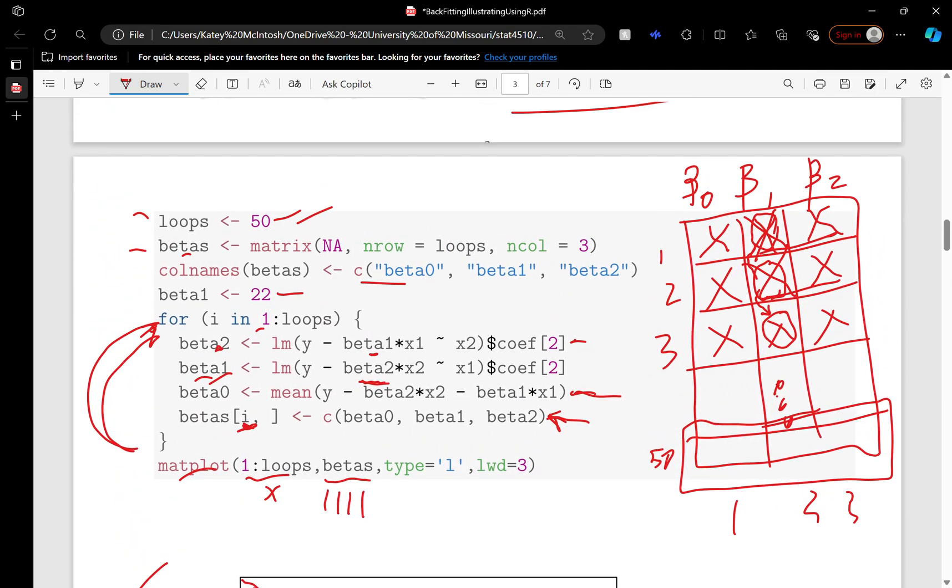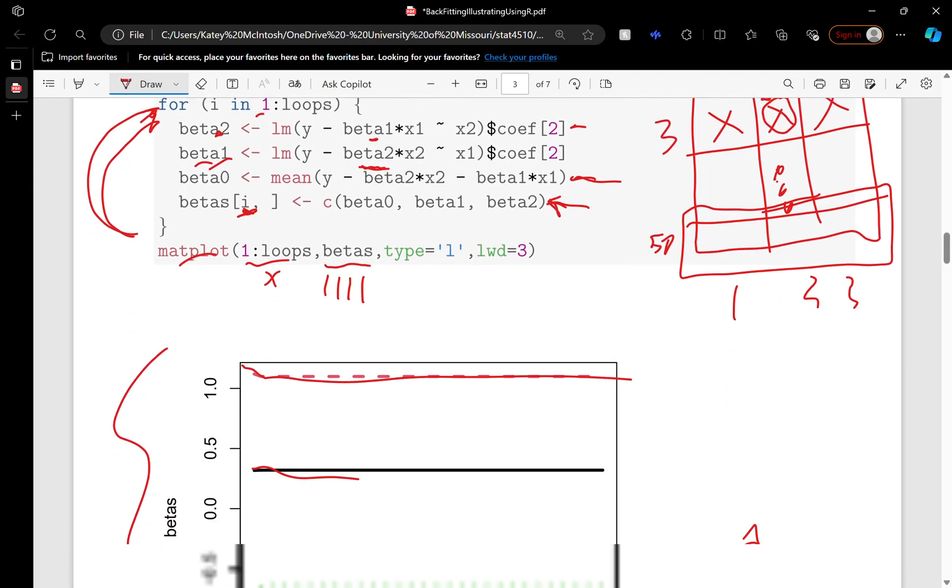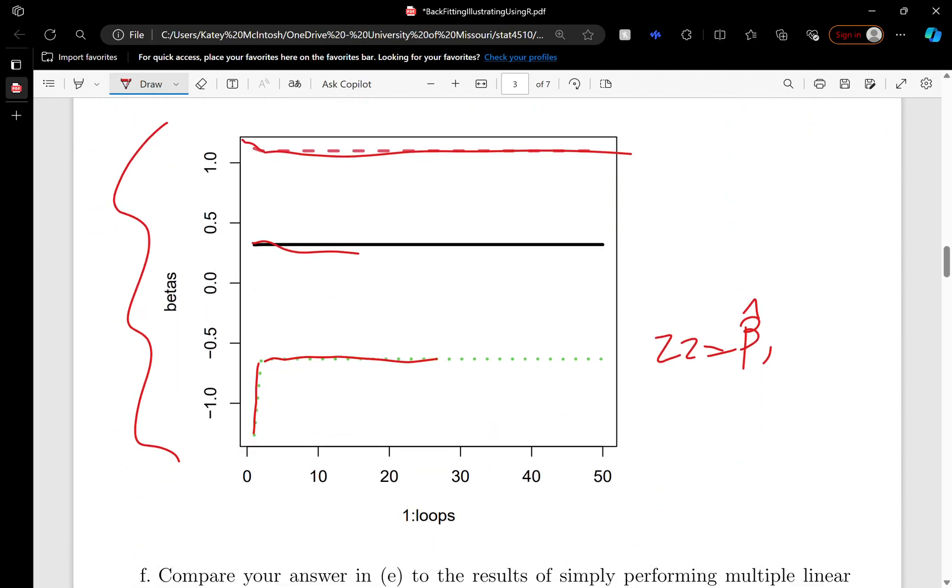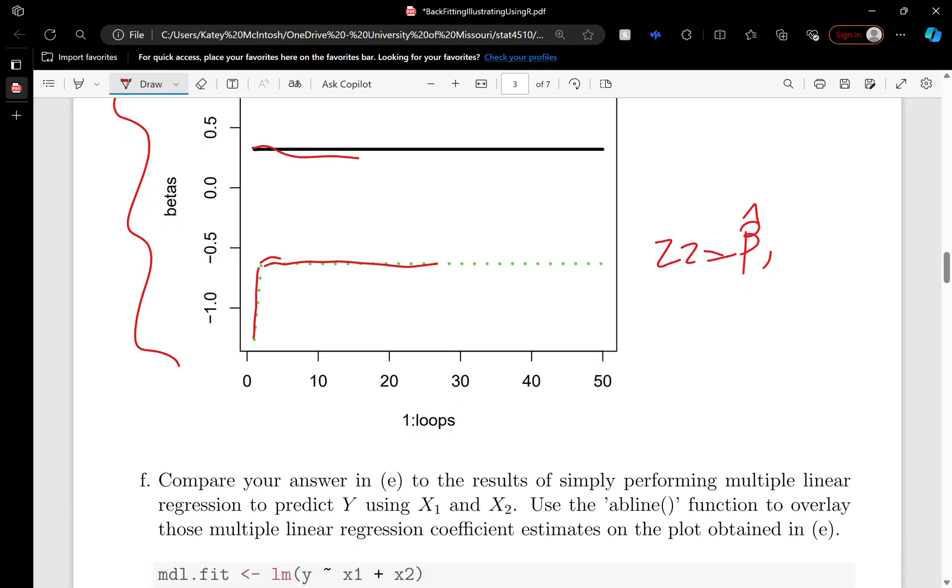If we go back to our matrix, after the first iteration, that estimate of 22 is updated. So that's not our first iteration of backfitting estimates. After three or four iterations, it converges fast.